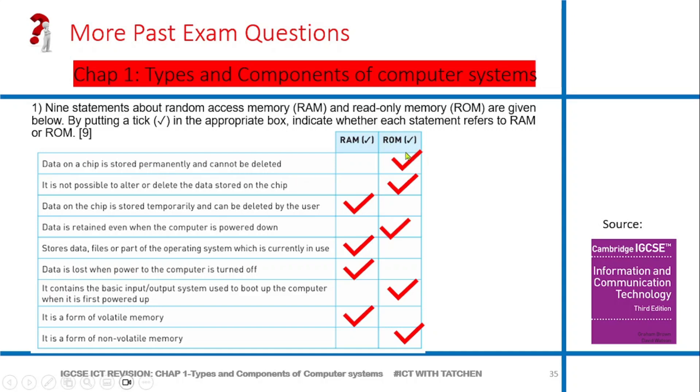So once you see permanent storage, you know it's ROM. It is not possible to alter or delete the data stored on the chip - even the ROM you cannot alter its data. Data on the chip is stored temporarily and can be deleted by the user - that is the RAM. Data is retained even when the computer is powered down. This goes for ROM because whenever you turn off your computer, the ROM still has its information. It holds the boot instructions for your computer, so you cannot alter it.